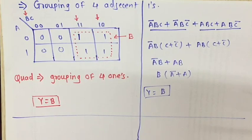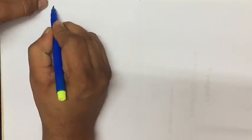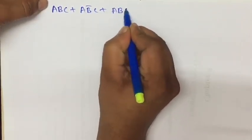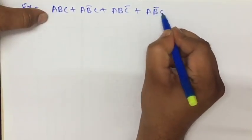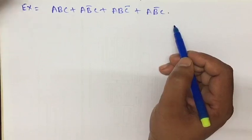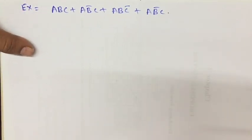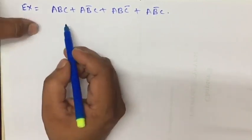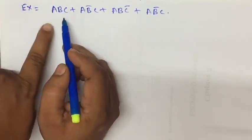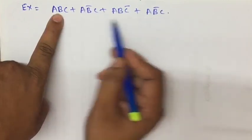Now let us consider one more example. A Boolean equation is given: ABC + AB-bar·C + ABC-bar + A-bar·B-bar·C. We need to find the simplified equation using the K-map. First, we identify the number of literals: A, B, C — three literals. So we draw a three-variable K-map with eight boxes.